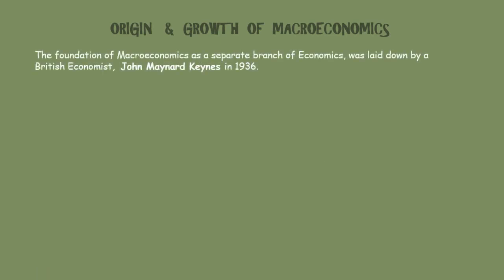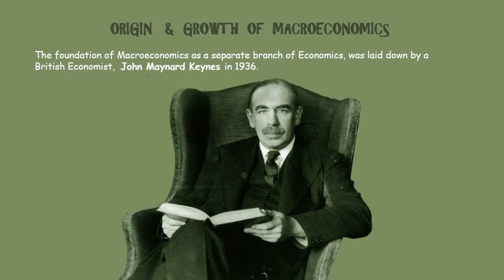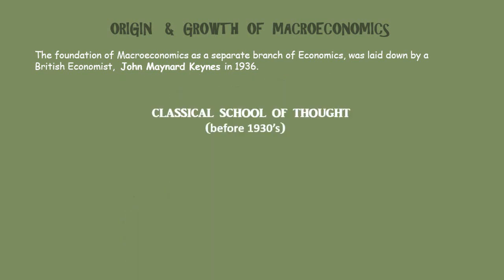The foundation of macroeconomics as a separate branch of economics was laid down by British economist John Maynard Keynes in 1936. The process of change in economic thinking that resulted from his work is called the Keynesian Revolution. But revolution against what? What was the old school of thought? Keynes termed it the classical school of thought.